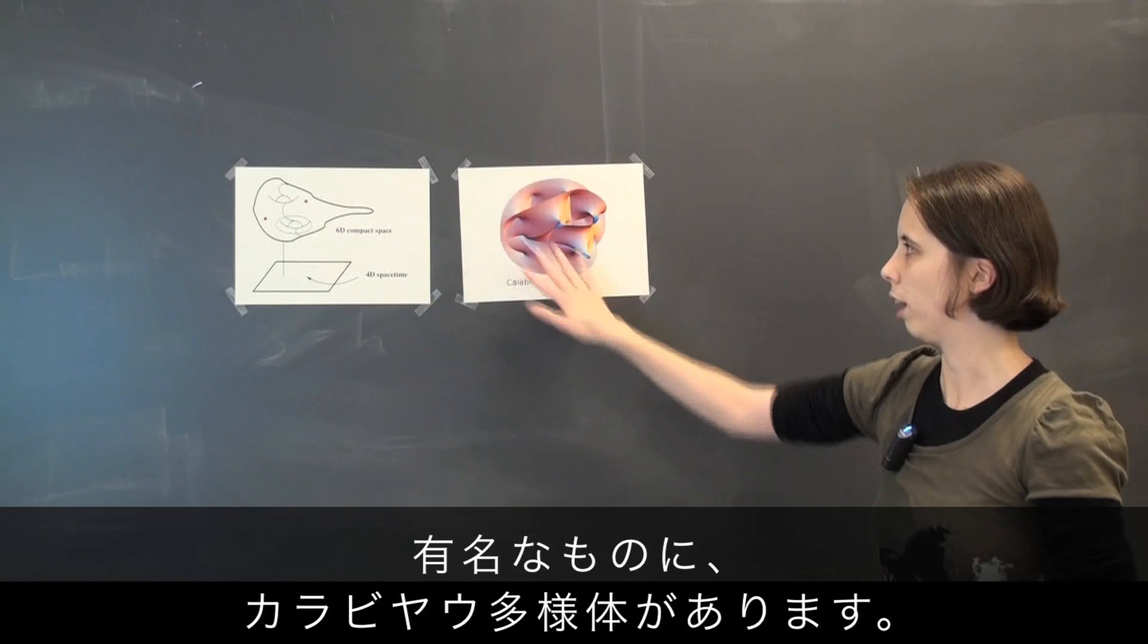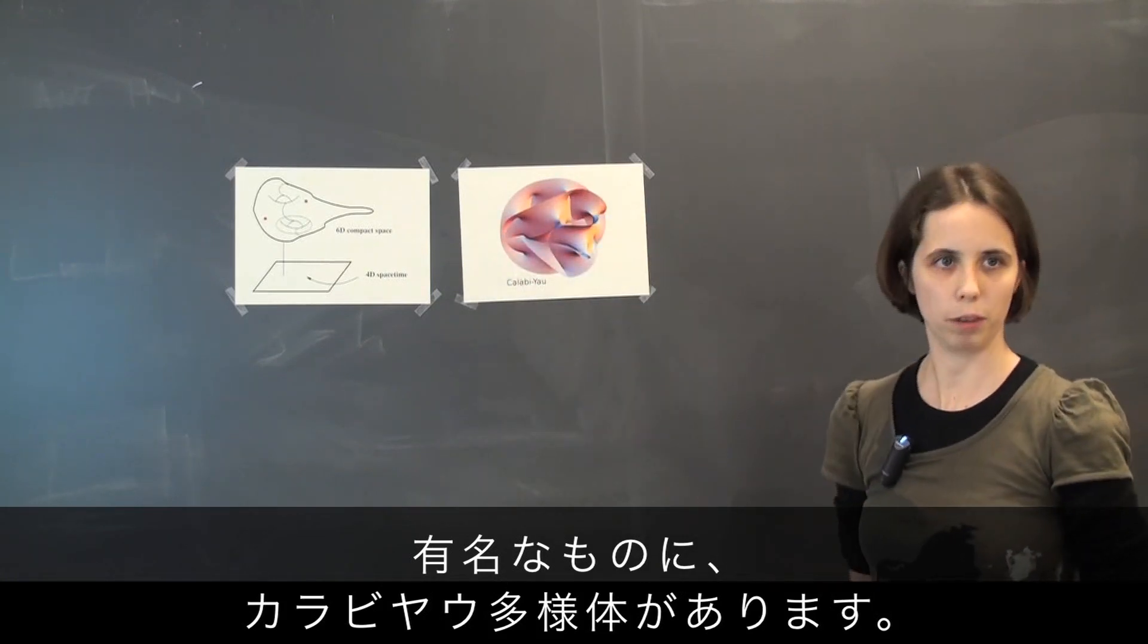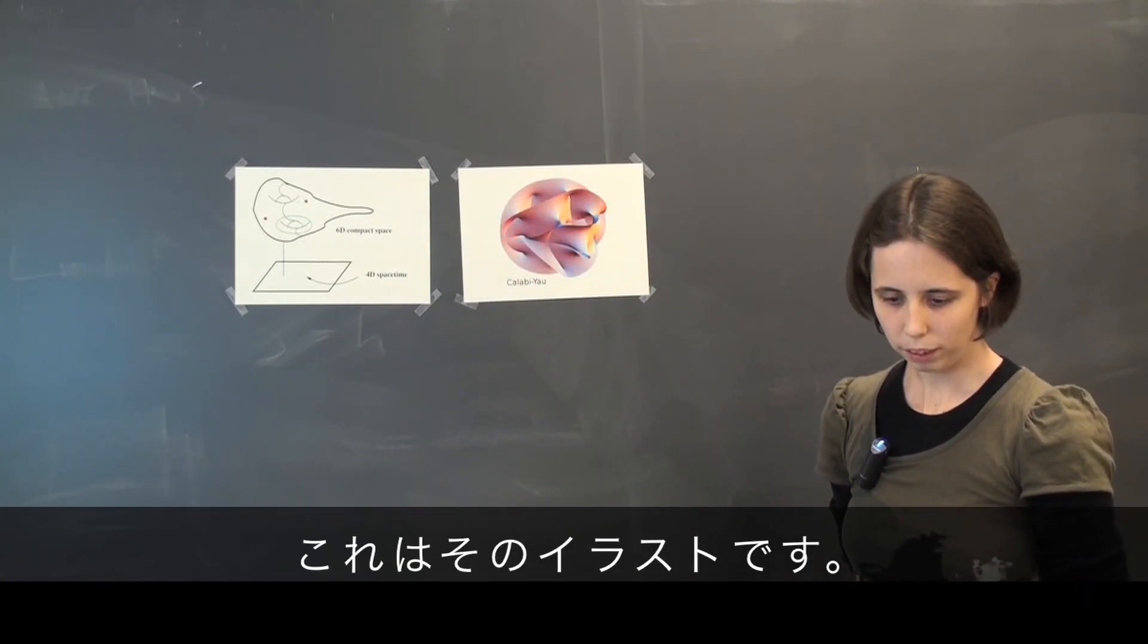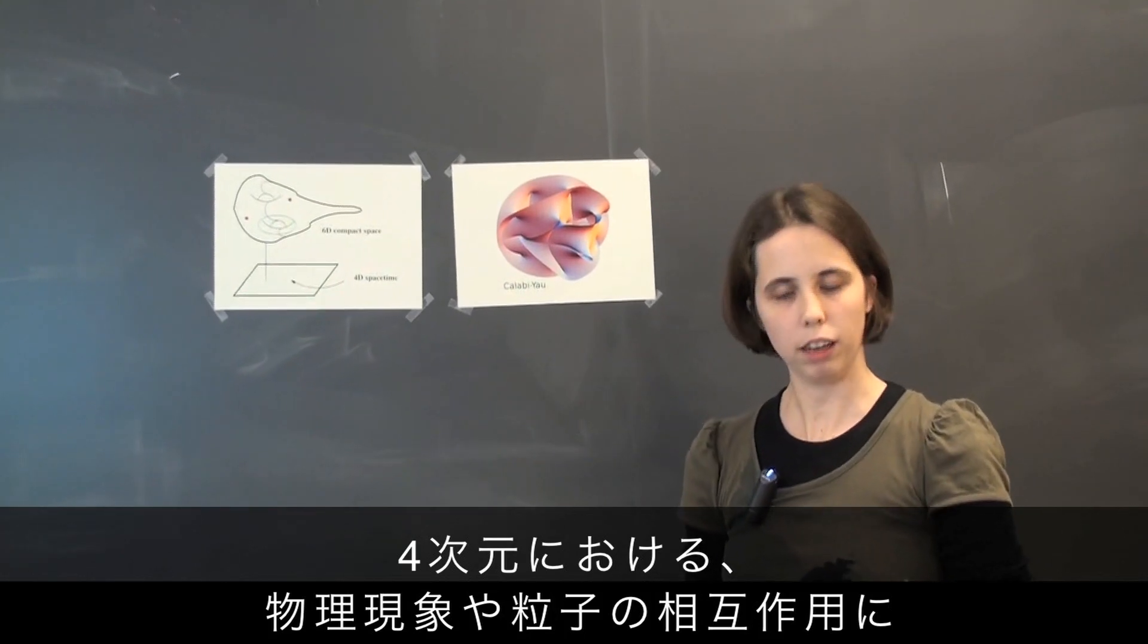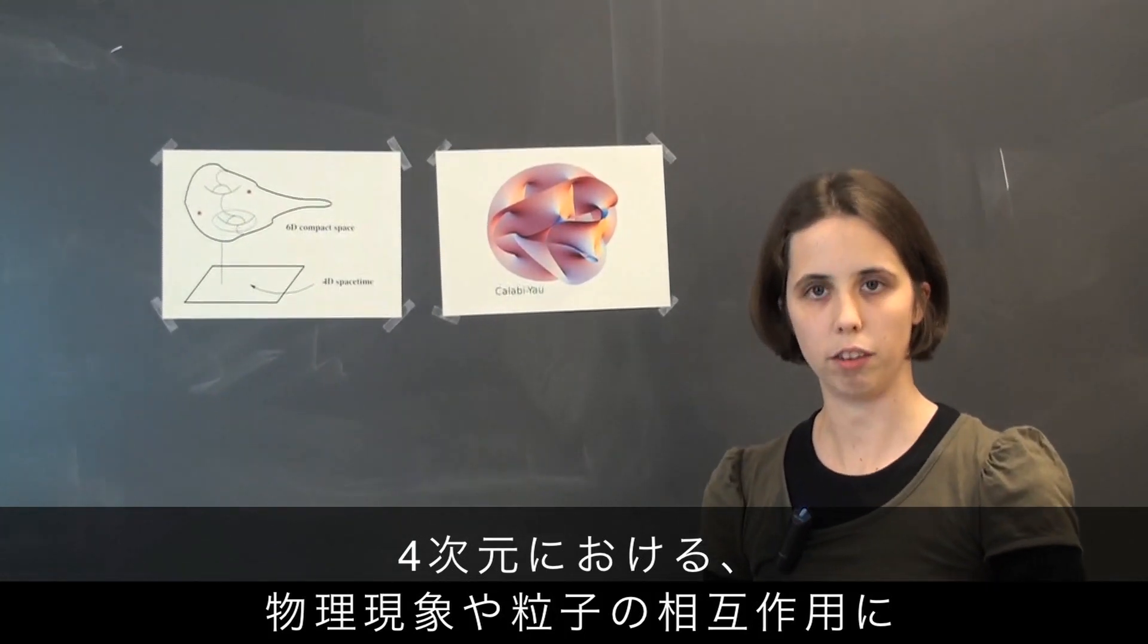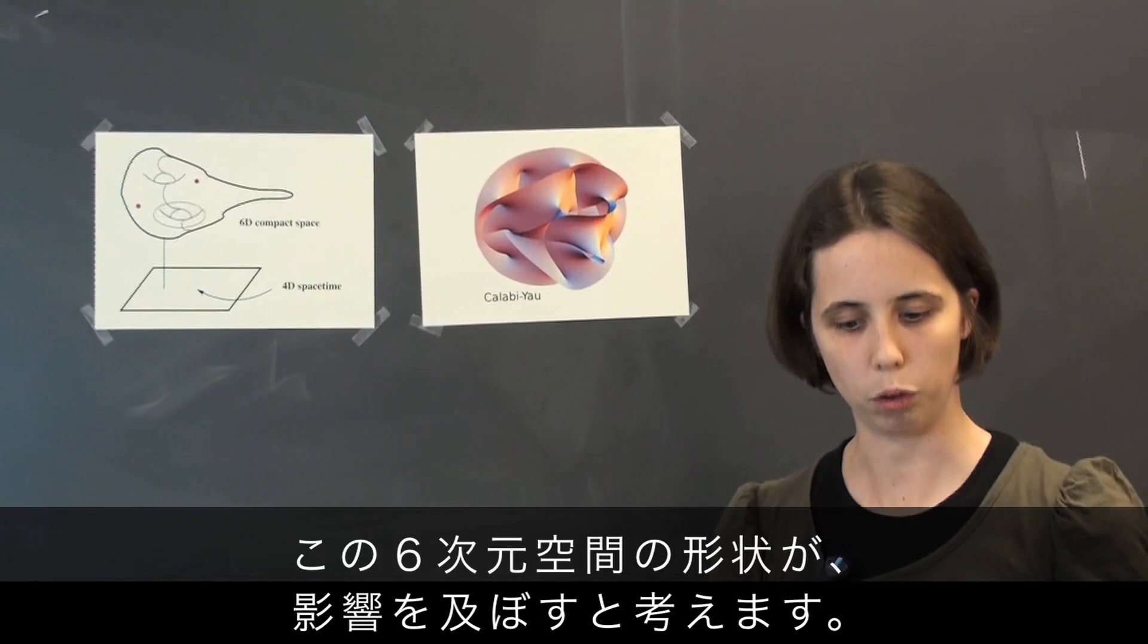The most prominent ones are called Calabi-Yau manifolds. This is a cartoon of a Calabi-Yau. And the geometry of these internal 6 dimensions influences the physics and the particle interactions in 4 dimensions.